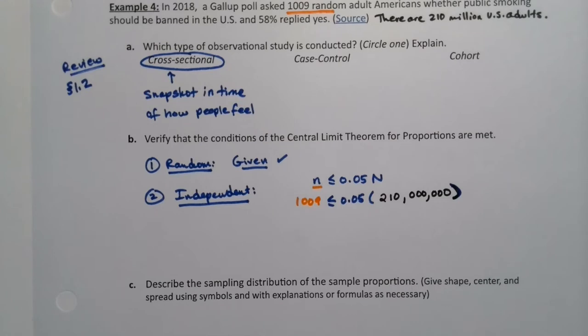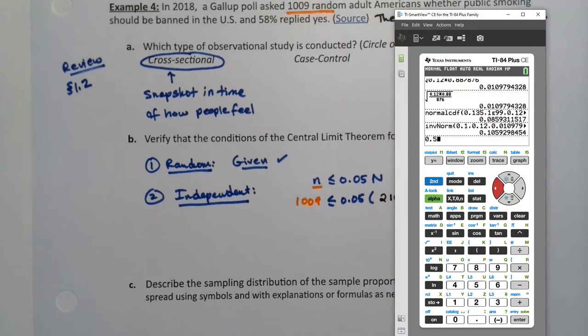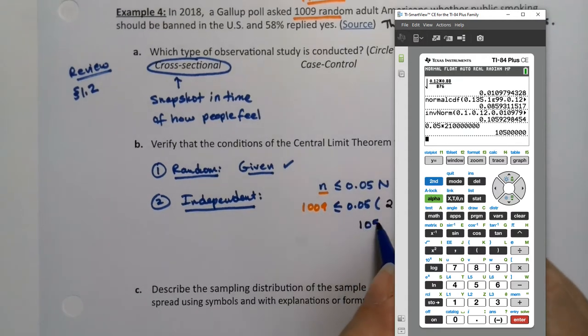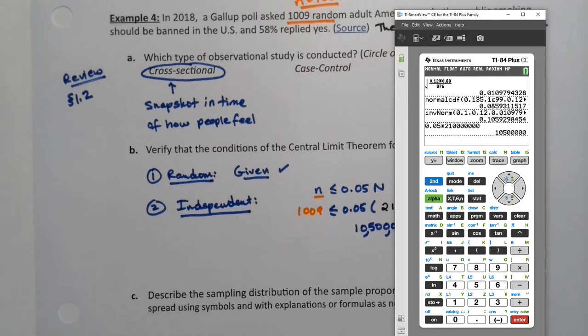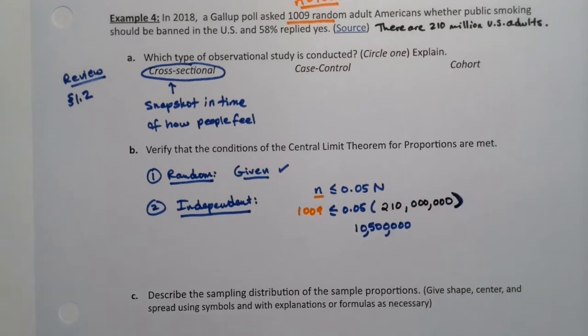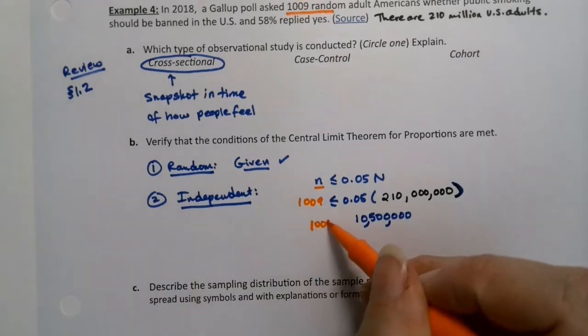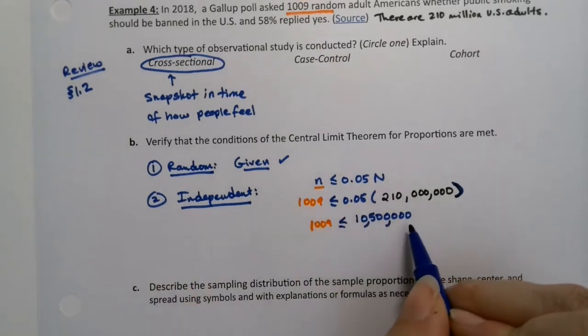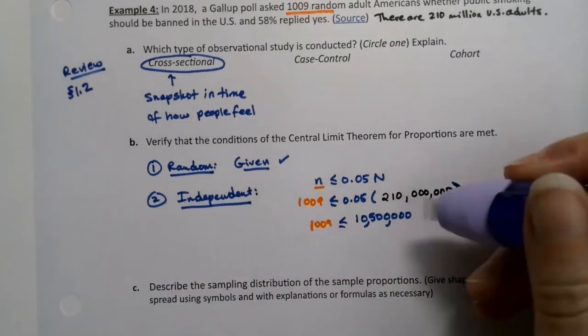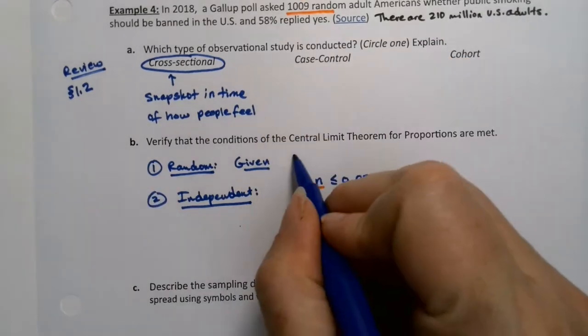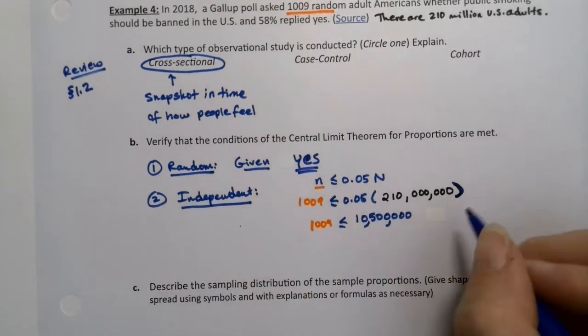If we didn't know capital N, we would just say all U.S. adults and kind of wave our hands at it like a magician. But we actually know what this is. It's 210 million. I have a calculator. I can find what that is. So 0.05 times 210 followed by 6 zeros. So it's 21 followed by 7 zeros. So 210 million is that. So 1, 0, 5, 1, 2, 3 is five zeros. So if I put the commas, it's 10,500,000. And 1,009 is definitely less than 10,500,000. So we would say yes to this. So we have a yes here.